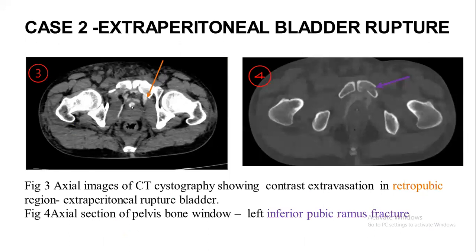Case 2 is extraperitoneal rupture of the bladder. Figure 3 shows axial images of CT cystography demonstrating contrast extravasation in the retropubic region, indicating extraperitoneal bladder rupture. Image 4 is an axial section with bone window showing fracture of the left inferior pubic ramus.